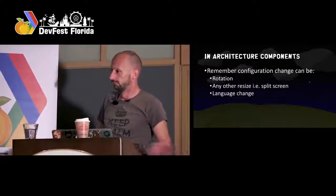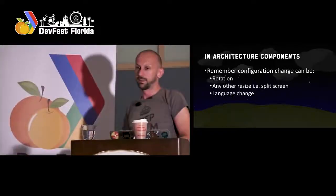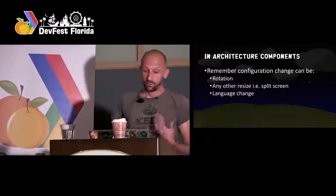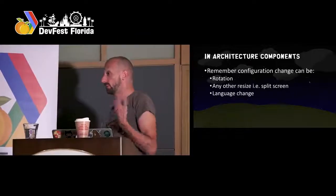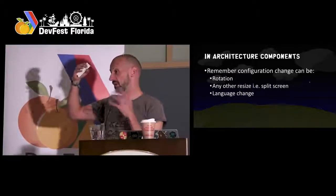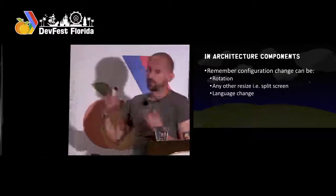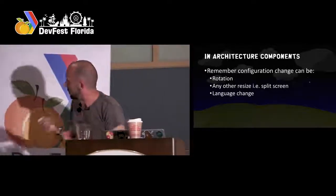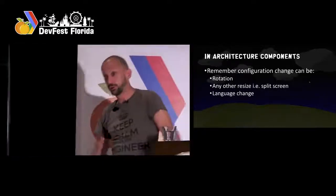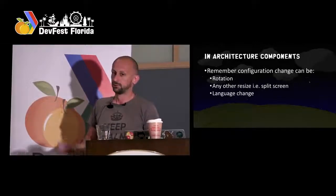The ViewModel survives configuration changes. There are also more things nowadays that can be a configuration change — we have split screens since Android N, so going from portrait into landscape is like a rotation, the configuration of the app changes. A language change is also a configuration change — everything gets thrown away and recreated. We don't want to go into an inconsistent state of your app just because of this. We've all created a lot of bugs because of this because we kind of ignored that problem.